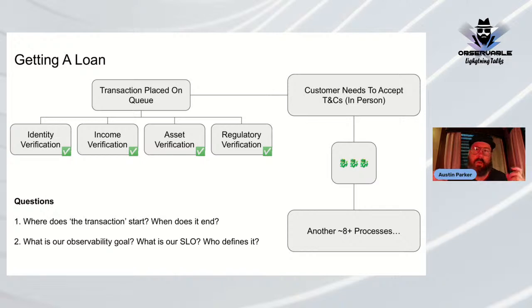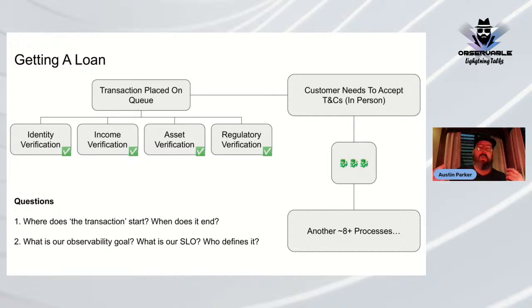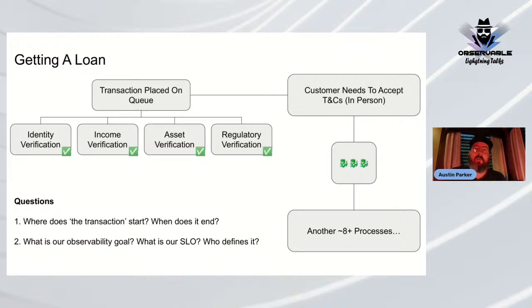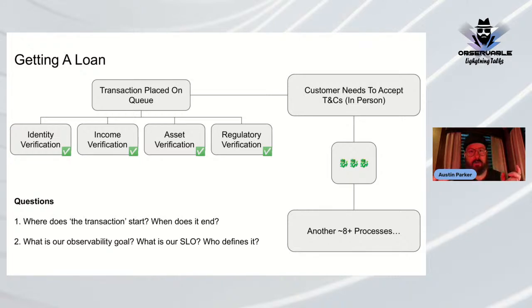Key questions arise: when does this transaction start? When does it end — when the first phase completes, or when money actually arrives? What is the actual observability goal, and who defines the SLO? Can you optimize something that has significant human-driven load-bearing parts, like someone physically walking to a bank branch? These questions highlight the tension between logical simplicity and implementation complexity.